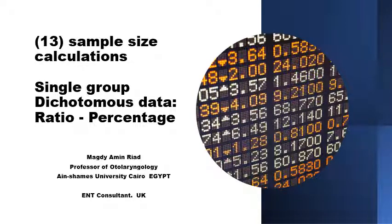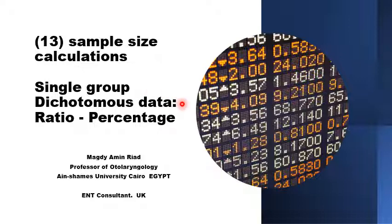Assalamu alaikum. This is the second presentation of the series of short presentations to explain how the sample size is calculated in different scenarios. This presentation will go through calculating the sample size required in single group research with no control groups — just one single group of patients — where the data is dichotomous rather than continuous, such as alive or dead, ratios like the rate of bleeding, rate of complication, percentages of infection, or percentages of success rates.